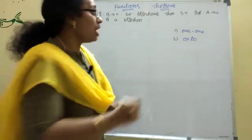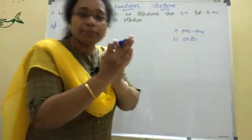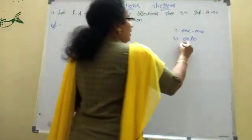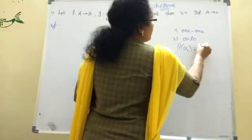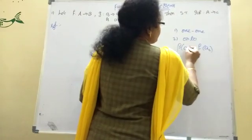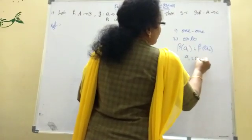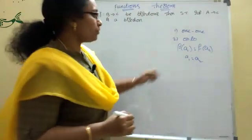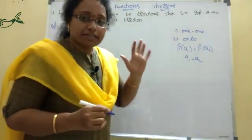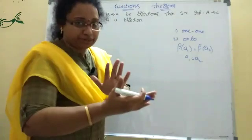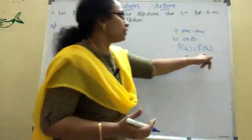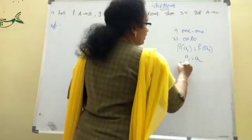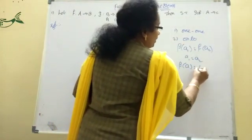What is 1-1? F of A1 and F of A2 — so F of A1 is equal to F of A2, which implies A1 equal to A2. That means 1-1 function: F of A1 is an image, and if the images are equal, then A1 is equal to A2.